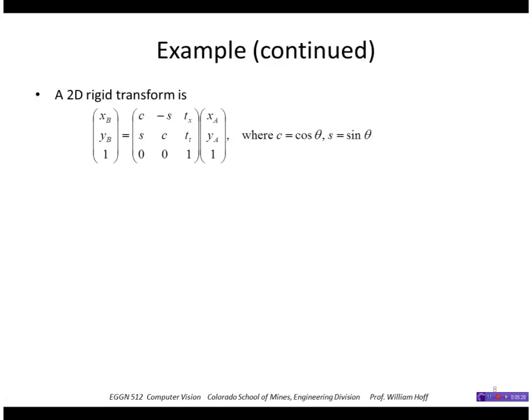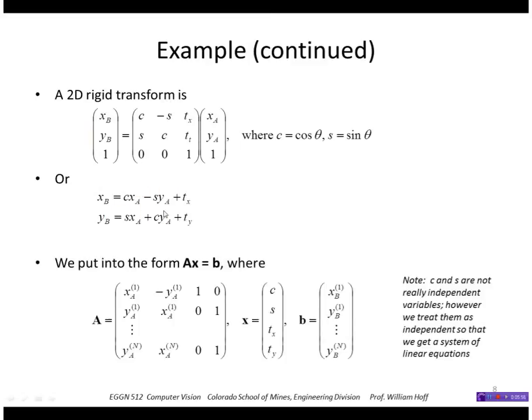So to find that transform we look at the form of a 2D rigid transform. So it's the two-dimensional rotation cosine minus sine, sine cosine, plus the translation tx, ty. Or writing that out we get this set of equations for x and y finding a point in image B as a function of the corresponding point in image A. So we collect all the unknowns into a vector x which is the cosine, the sine, and the translation in x and translation in y.